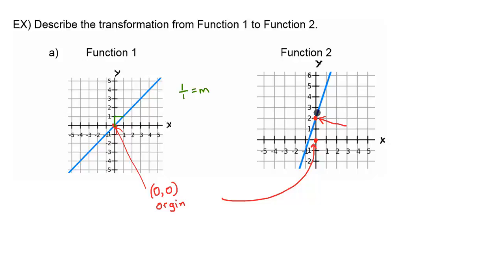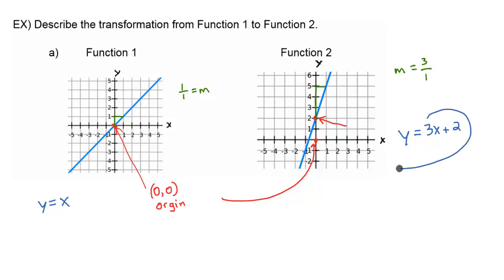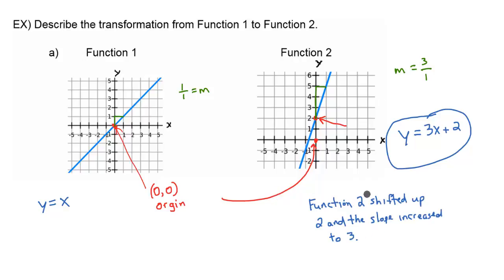If you look at the line in function 2, it's going up 3 and then to the right one. So the slope of this one is going to be 3 over 1. So not only did it shift up, it also is increasing quicker — the slope is bigger. The starting point for function 1 was just y equals x, and then the line for function 2 is y equals 3x plus 2, where 3 is the new coefficient in front of x and 2 is the new y-intercept. Function 2 shifted up 2, and the slope increased to 3.